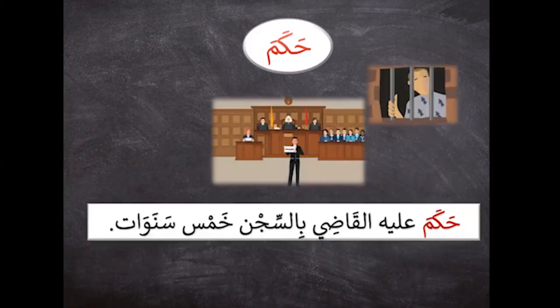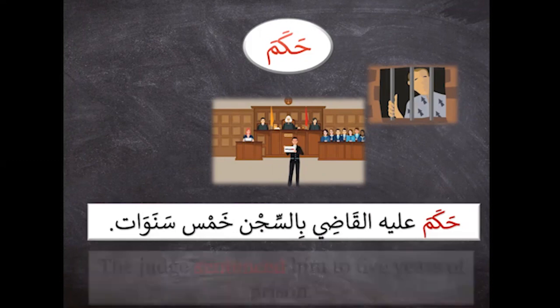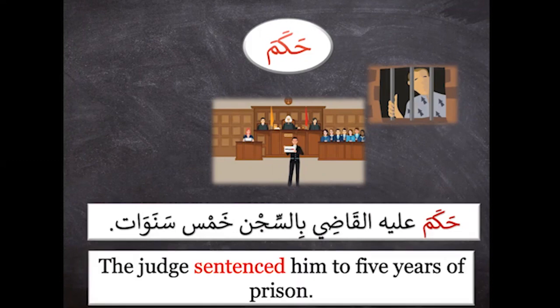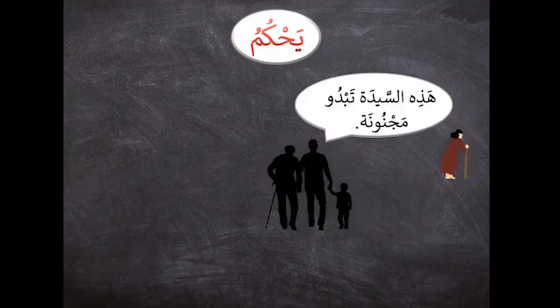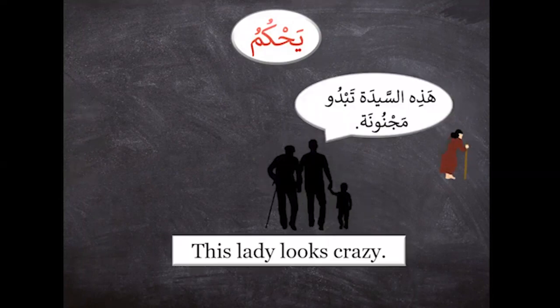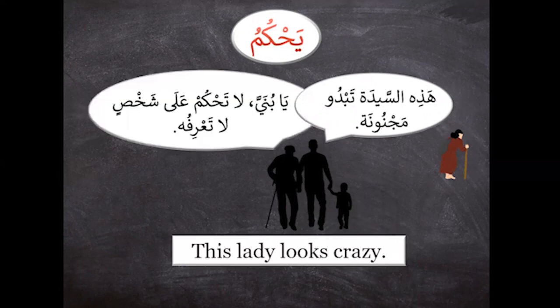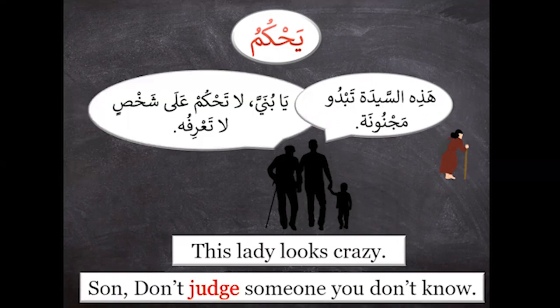يحكم — حكم عليه القاضي بالسجن خمس سنوات. (The judge sentenced him to five years in prison.) يحكم — هذه السيدة تبدو مجنونة. يا بني لا تحكم على شخص لا تعرف. (Son, do not judge a person you do not know.)